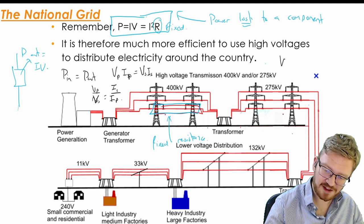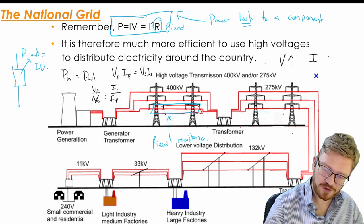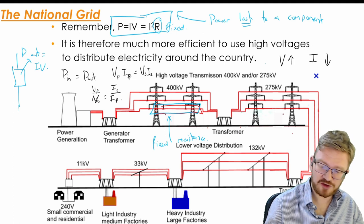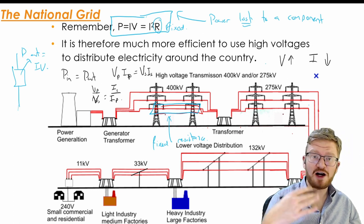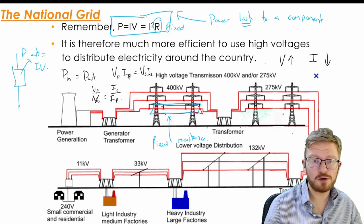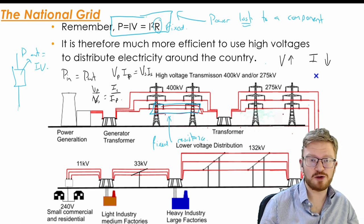So in other words, I can say if voltage goes up, current goes down. So that tells me that the higher my voltage in my transmission lines, the lower my current and the less energy I'm going to waste.